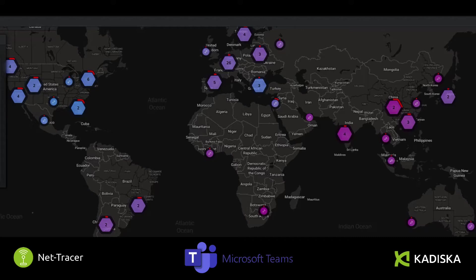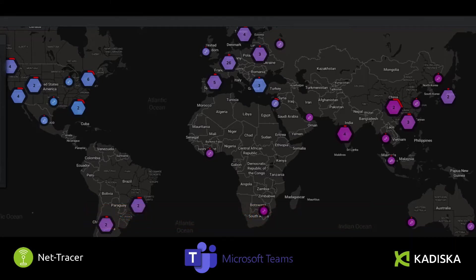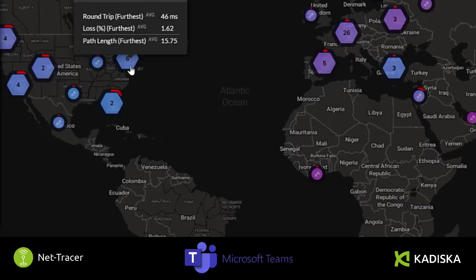Let's now have a look at how you can assess these best practices by using the KADISCAN platform. In this example, we are monitoring the connectivity performance to Microsoft media servers located in the US. From the different colors, you can see that accessing these media servers from different locations in the US is not a problem.